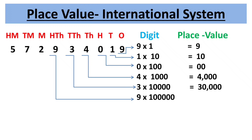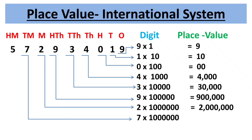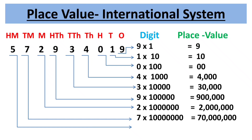The third period is millions, consisting of three place values: millions, ten-millions, and hundred-millions. Place value of 2 is 2 × 1,000,000 = 2 million. Place value of 7 is 7 × 10,000,000 = 70 million. Place value of 5 is 5 × 100,000,000 = 500 million.